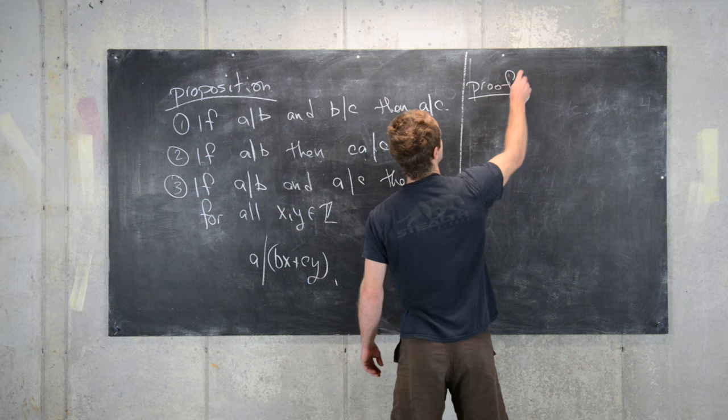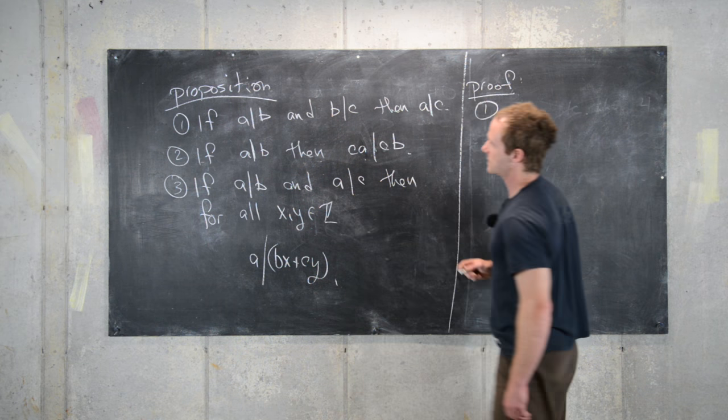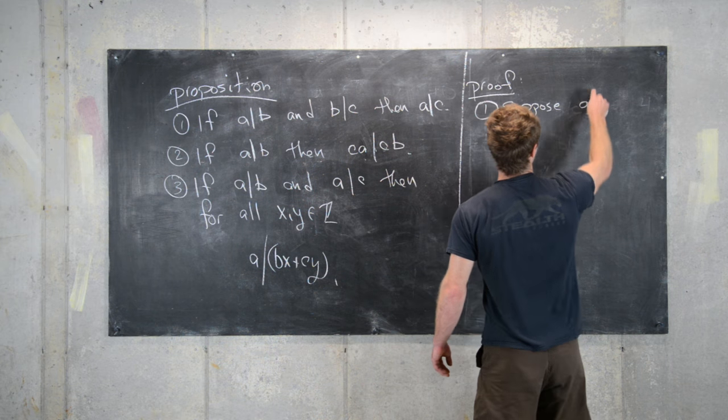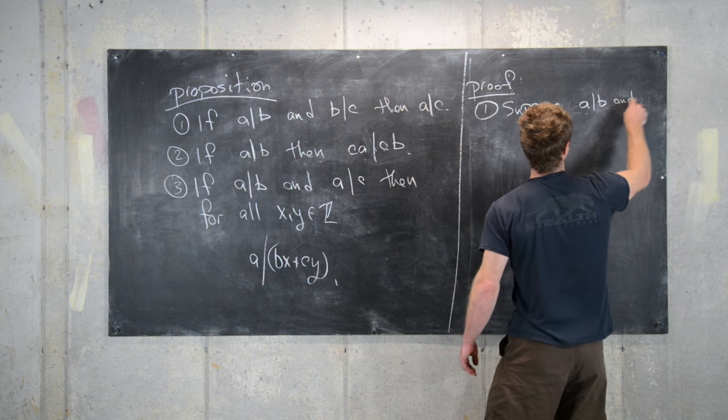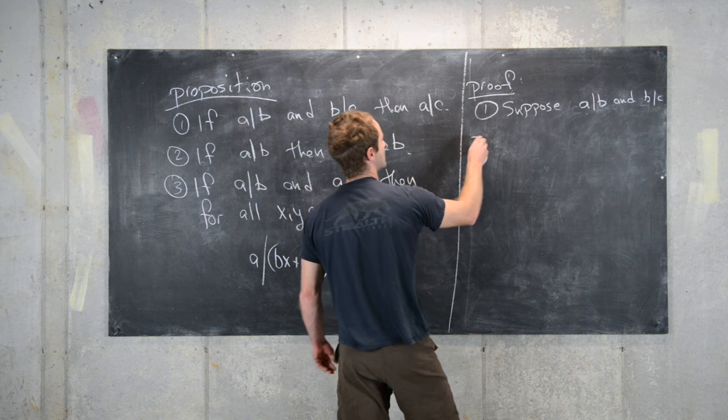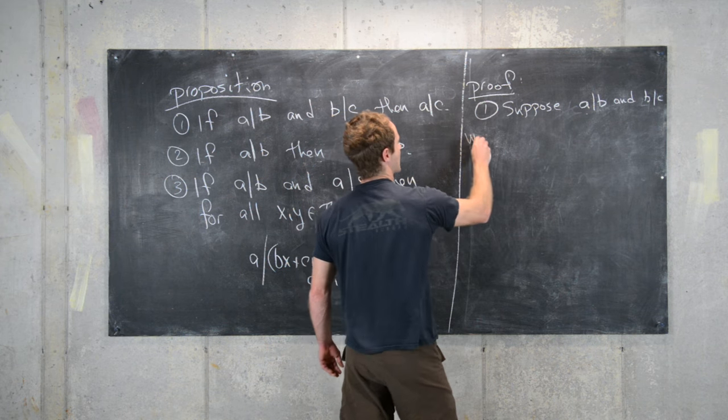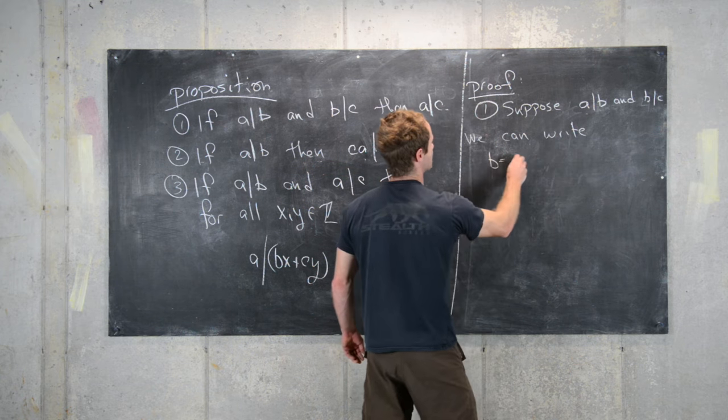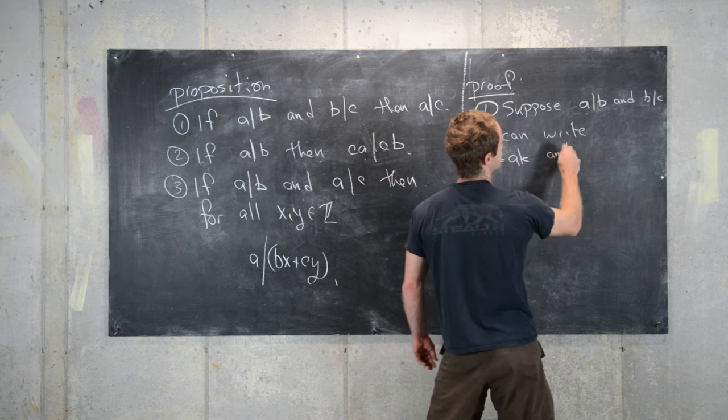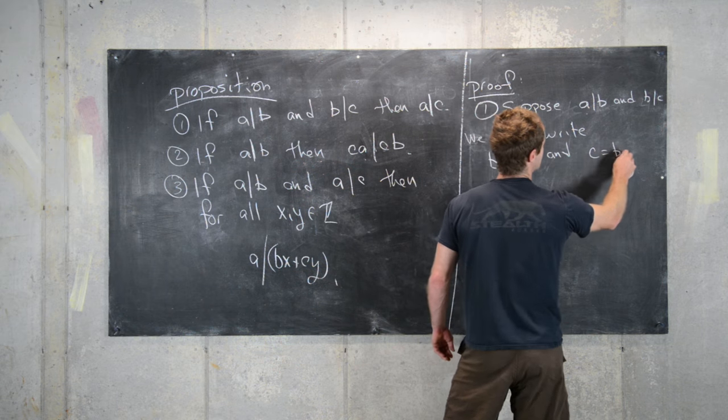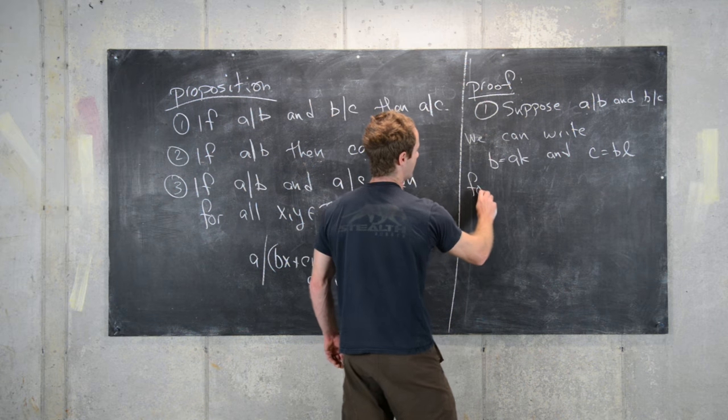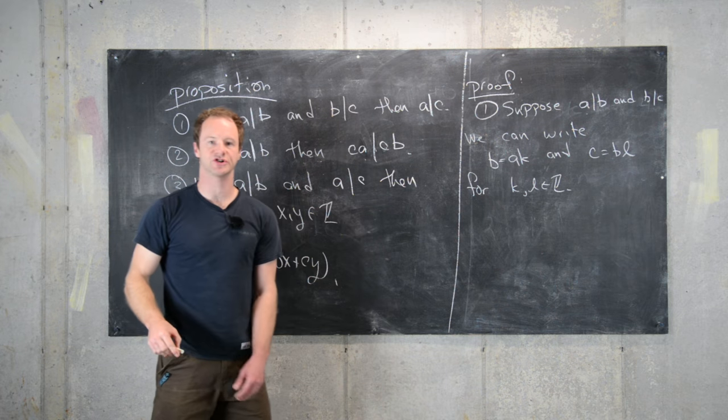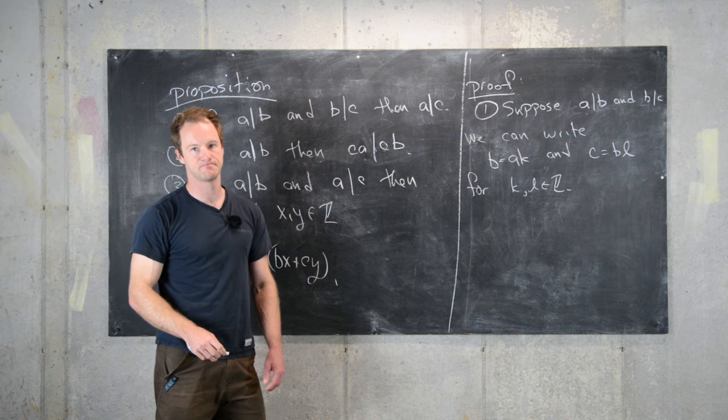So proof for number one. Let's suppose that a divides B and B divides C, so that means we can write B equals a times K and C equals B times L for K and L some appropriate integers.